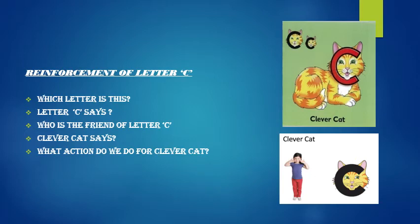And what does Clever Cat say? Clever Cat says 'k'. And what action do we need to do for Clever Cat? We have to stroke whiskers across our cheeks. You can see how this girl is doing — like this, you stroke whiskers across your cheeks. Now teacher is going to recite the Clever Cat rhyme for you.